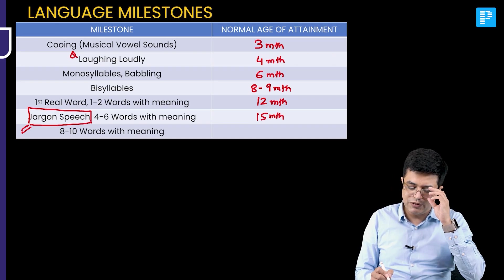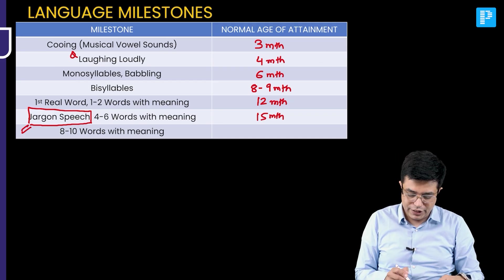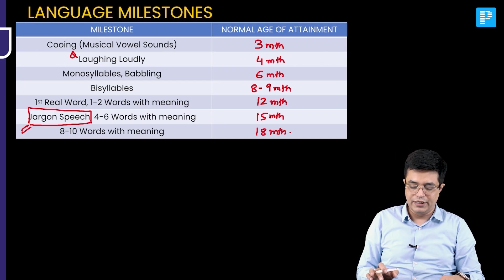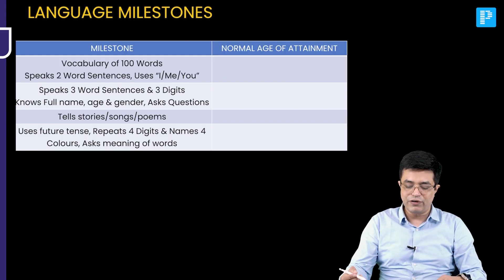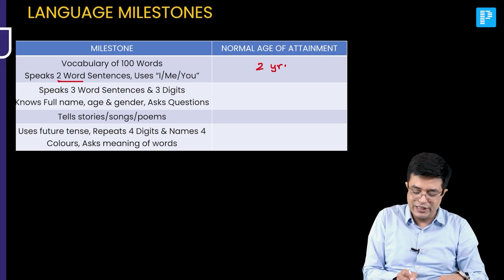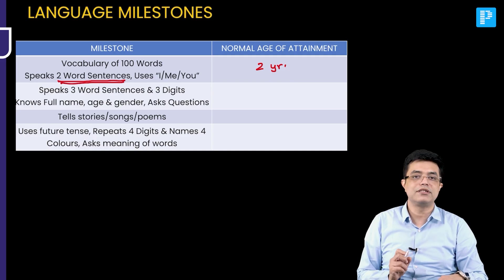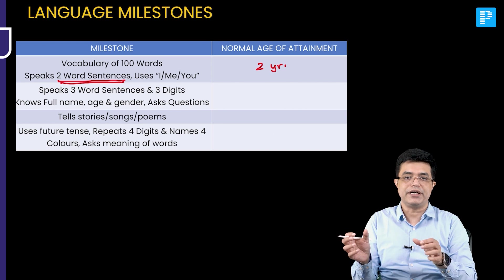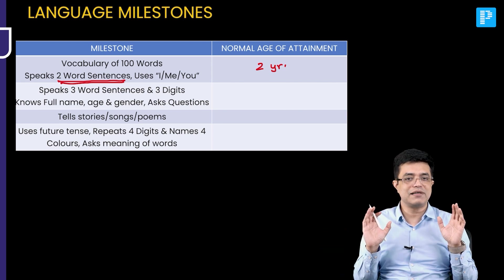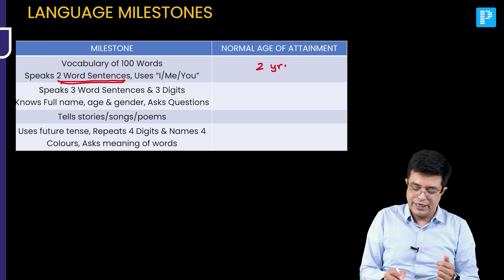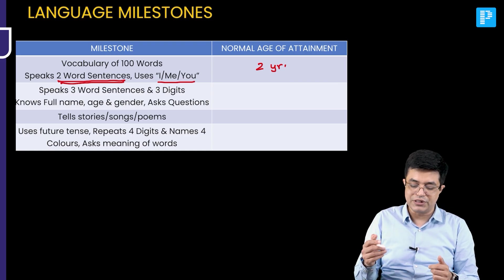4 to 6 words with meaning also come at 15 months of age. 8 to 10 words with meaning begins at 18 months of age. Then the child has a vocabulary of 100 words starting from 2 years of age. At 2 years, the child is also able to make and speak 2-word sentences — for example, 'mummy, shoe' — meaning he needs shoes. Using 'I,' 'me,' or 'you' also comes at 2 years.